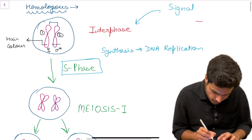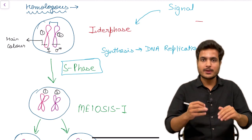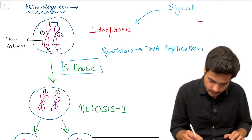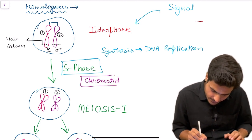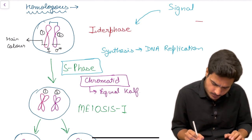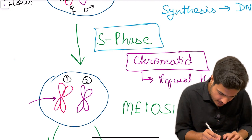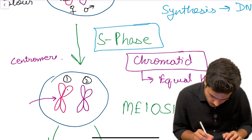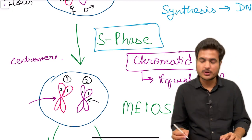After DNA replication, we still count two chromosomes, but the amount of DNA per chromosome has doubled — each chromosome has made its sister chromatid. A chromatid is the equal half of a chromosome, attached at the centromere. This constriction point is known as the centromere. We can count one, two chromatids on each chromosome, attached to each other at the centromere.